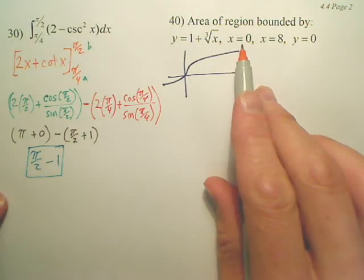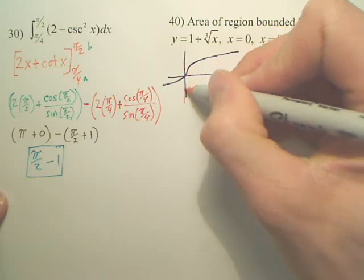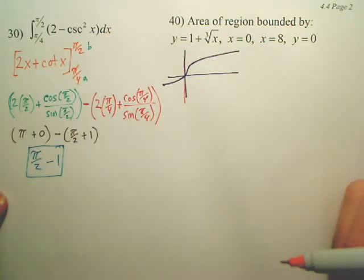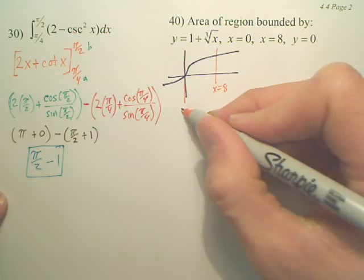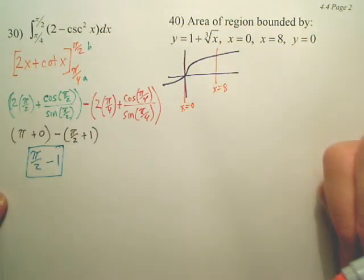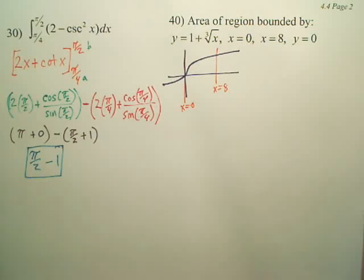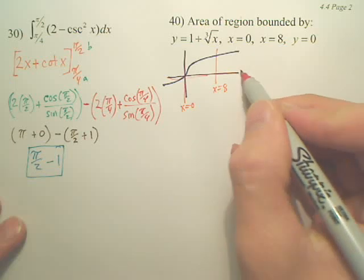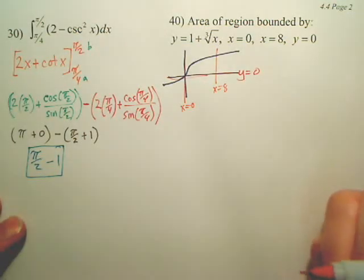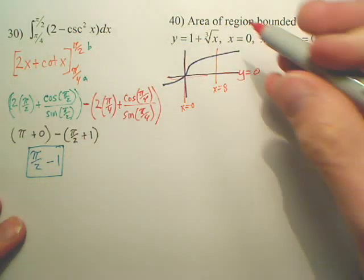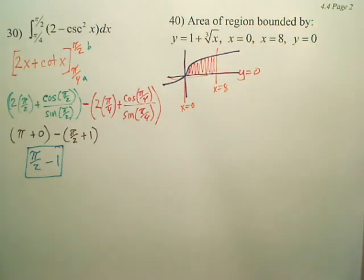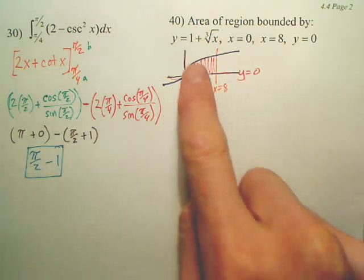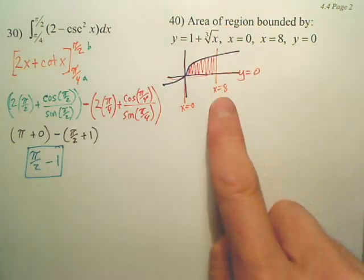Okay, x equals 0. Do you understand that's a vertical line right here? x equals 8. Do you understand that's x equals 8, that's x equals 0? And lastly, do you understand y equals 0 means this? So do you see some area right here? Do you understand we're trying to find that area? This is y equals 0, this is x equals 0, this is x equals 8.